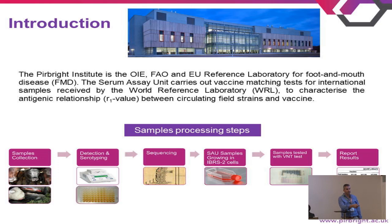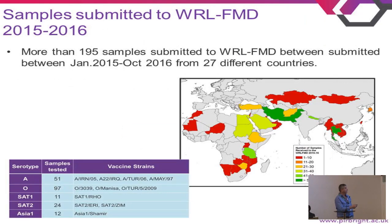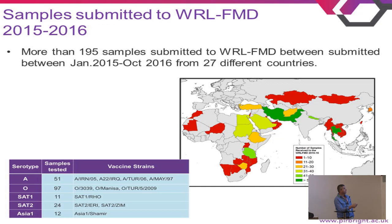These are the numbers of samples received between January 2015 and October 2016: over 190 samples from 27 different countries. Most of the samples are from serotype A and serotype O.